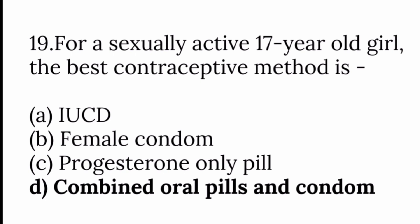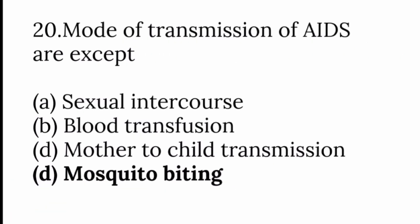For a sexually active 17-year-old girl, the best contraceptive method is combined oral pills and condom. The modes of transmission of AIDS are all except mosquito bite — it does not happen from mosquito bites. Transmission occurs via blood transfusion, HIV virus transfer, sexual intercourse, and mother-to-child transmission at birth.